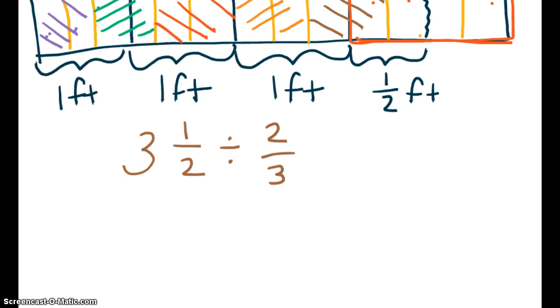OK. Now remember, when you divide fractions, you have to have fraction by fraction. So let's go ahead and say 2 times 3 is 6 plus 1 is 7 halves divided by 2 thirds. So we have fraction divided by fraction.